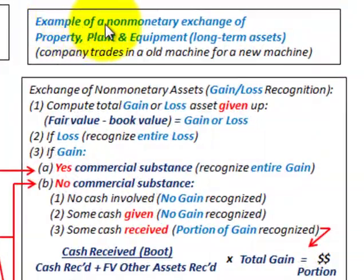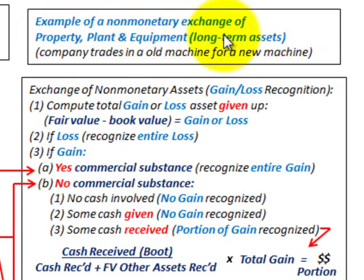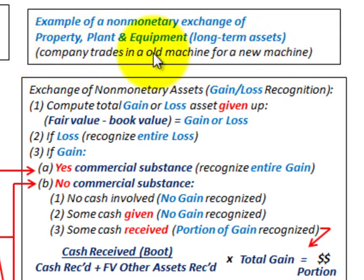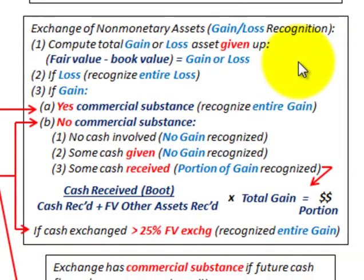Here we're going to be going through an example of a non-monetary exchange of some property, plant and equipment — long-term assets. Our example is where a company trades an old machine for a new machine, involving some cash as well. First, we have to look at the rules on these exchanges of non-monetary assets.